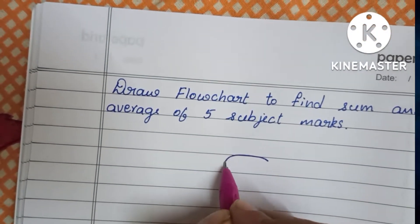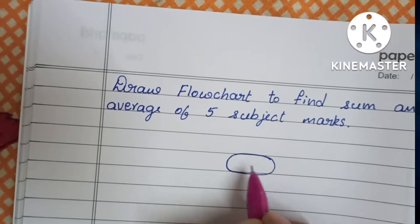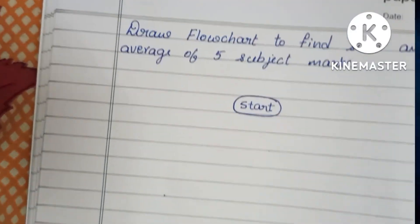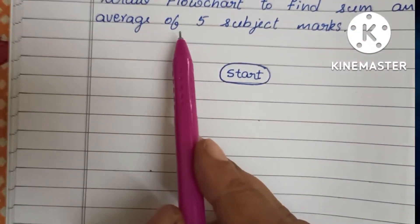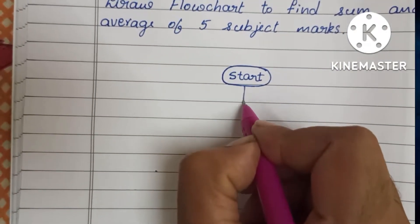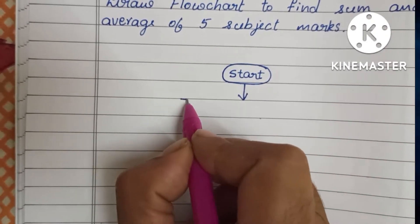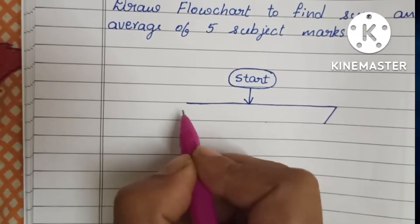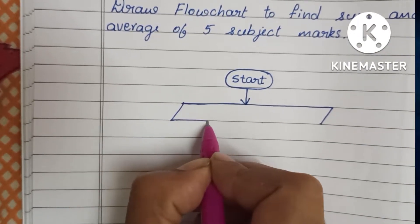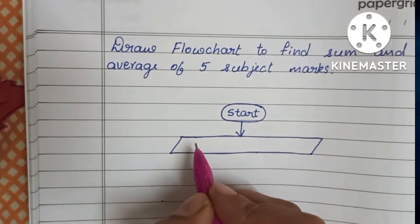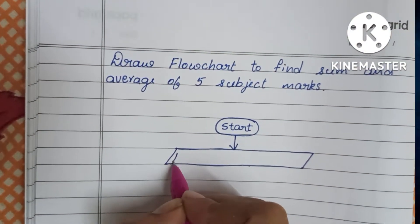The start statement is written within an oval shape. Next we have to read the input. Here we have to find the sum and average of 5 subject marks, so we need to read those 5 marks. The input variable is written within a parallelogram shape.